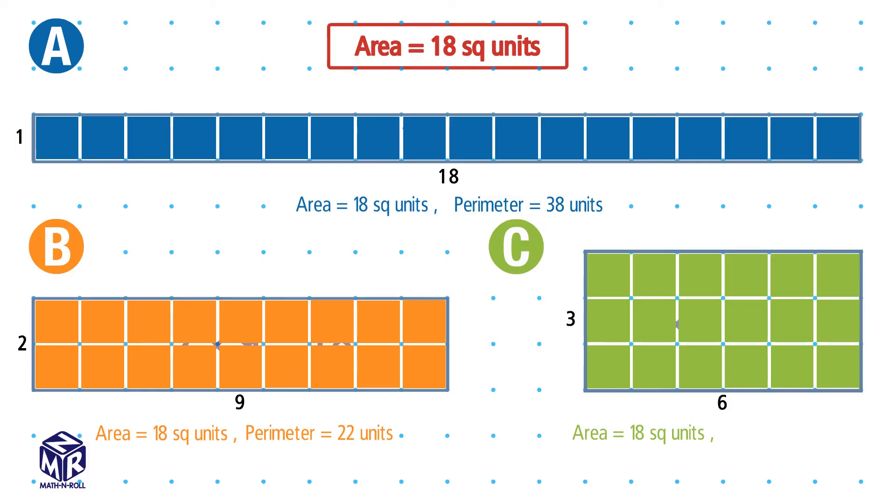We find the perimeter by adding the sides. 3 plus 3 plus 6 plus 6 equals 18 units. So rectangle C has an area of 18 square units and a perimeter of 18 units.